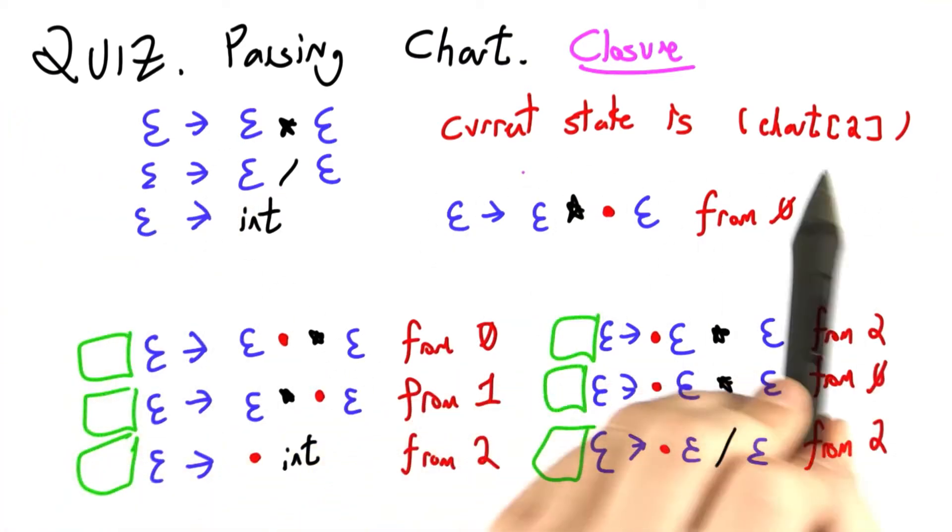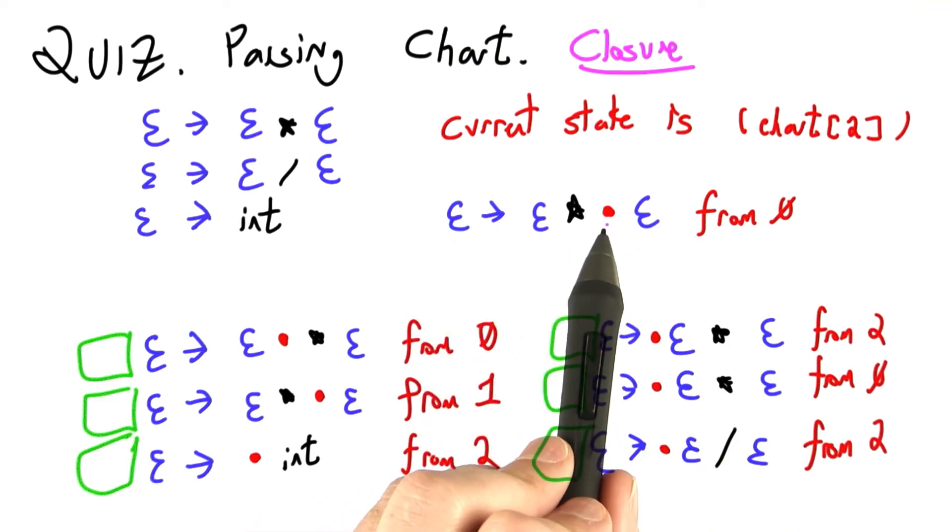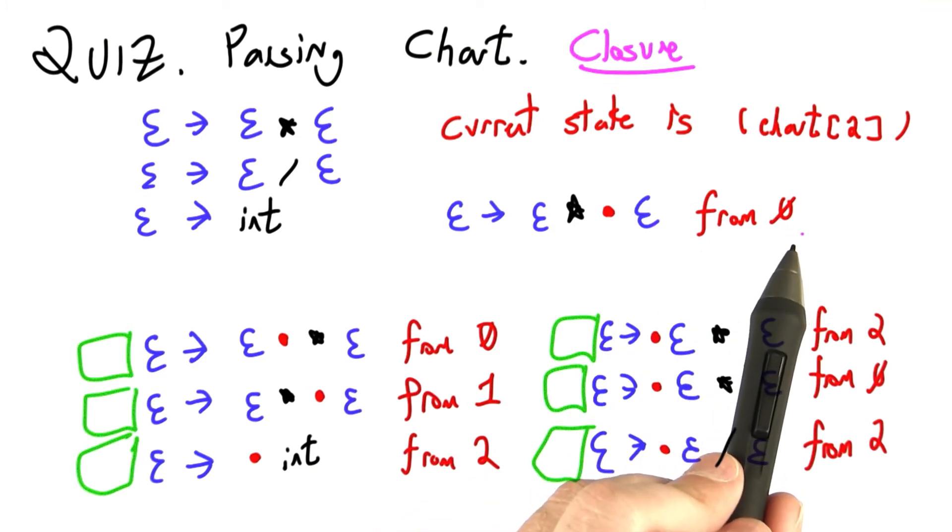We're currently looking at a state in chart 2. Looks like this. e goes to e times, here's where we are, and then another e coming from chart state 0.